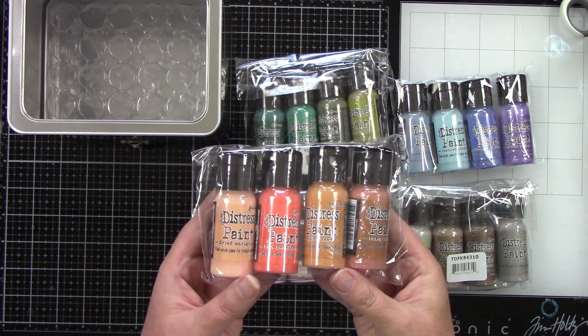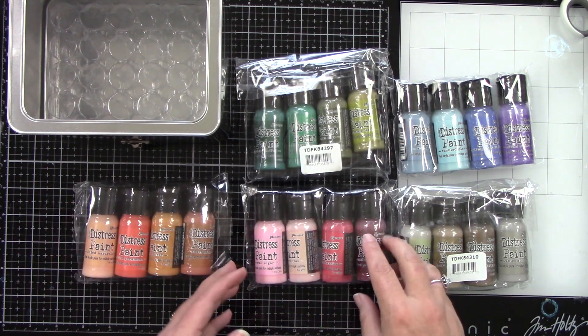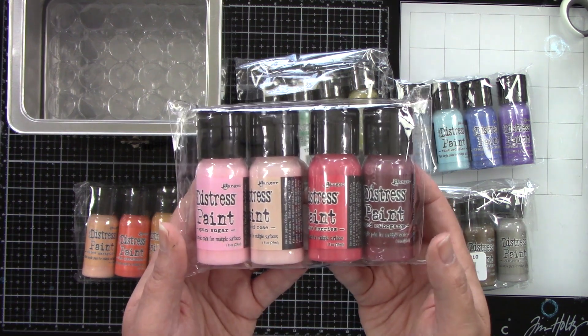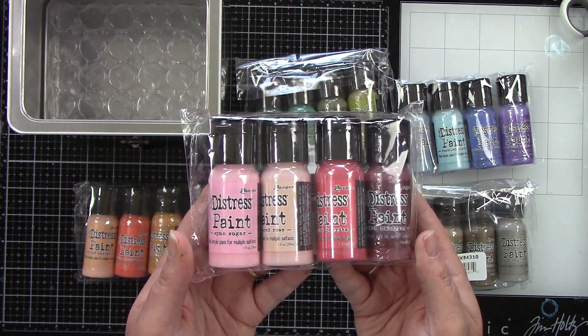This first one is dried marigold, ripe persimmon, wild honey, and rusty hinge. Then you have spun sugar, tattered rose, festive berries, and aged mahogany.